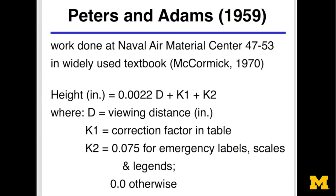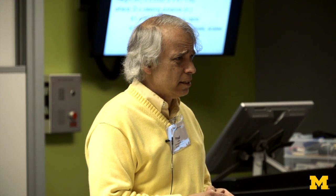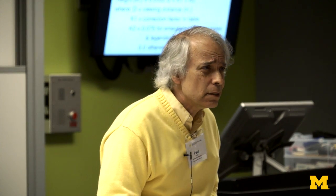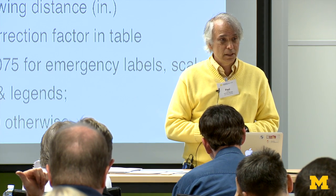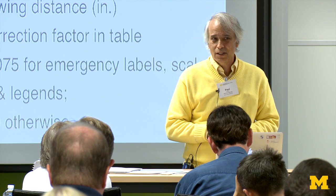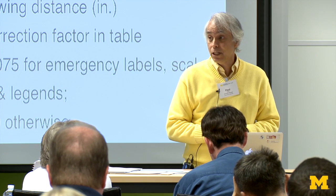The expression says the required height equals 0.022 times the viewing distance times two correction factors, one of which is in the table in the notes. That's how you compute the recommended size, and it works pretty well. But you have to ask: what does it mean to say something is legible? Is it 'I can see it, no sweat'? Or 'I think I got it'? Or 'I think it's this but I'm not really sure'? What's missing from a lot of these expressions is the probability that people got it right, and how much time it really took.